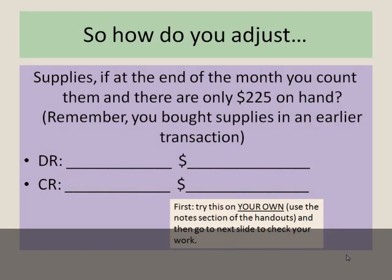So let's do an adjusting entry here for our supplies account. Remember, in a previous transaction we purchased $400 worth of supplies. But now it's a month later, and the company counts and there's only $225 worth of supplies. We had that $400 sitting on the balance sheet as an asset, but we can't leave it there as $400 forever. As we use it up, we move it from the asset account to the expense account. That's a simple transaction, but it has huge implications for our statements.